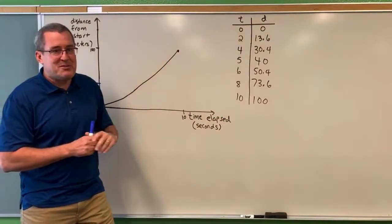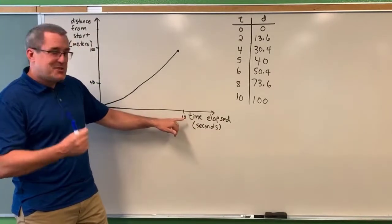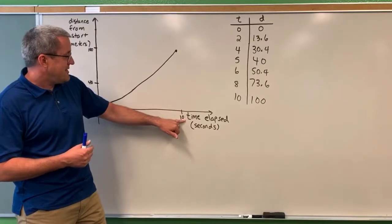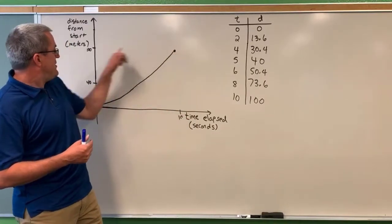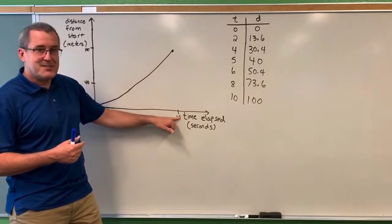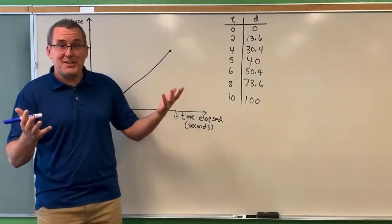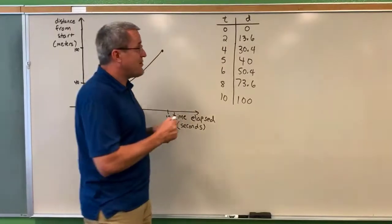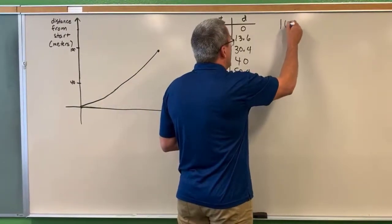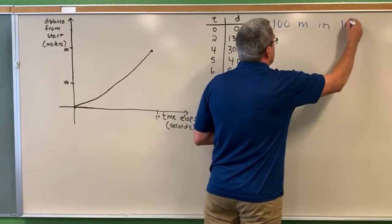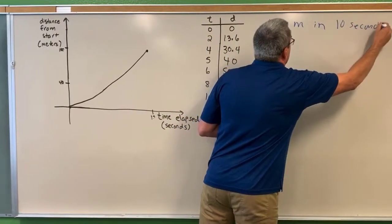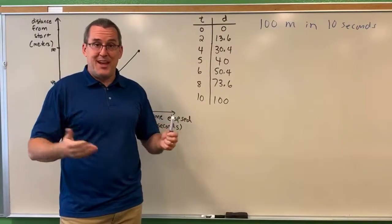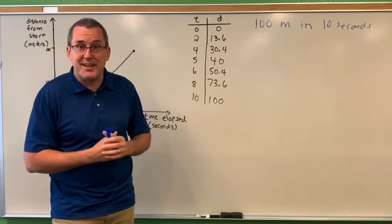Just for ease of computation, in this particular race, the runner we're tracking finished in 10 seconds — they ran 100 meters in exactly 10 seconds. We might ask, how fast did this runner run? We could answer by saying the runner ran 100 meters in 10 seconds, and that is a perfectly legitimate way to communicate how fast he ran: 100 meters per 10 seconds.